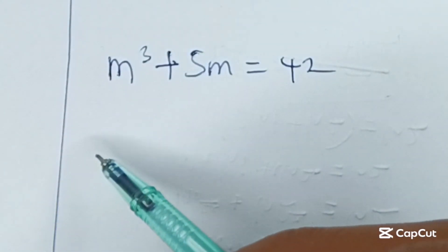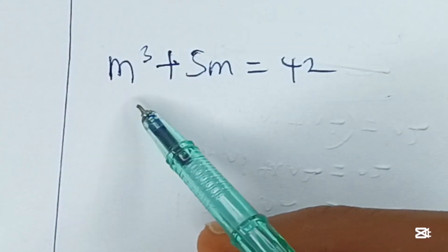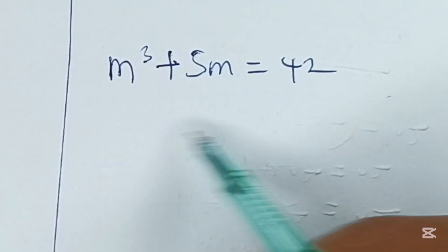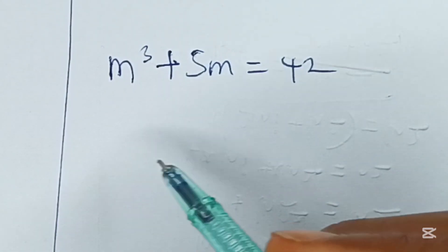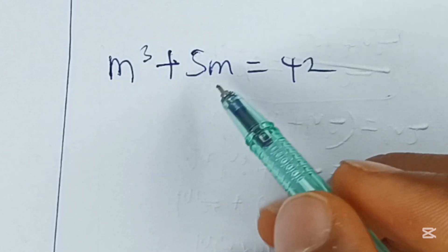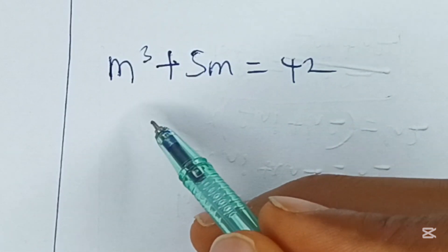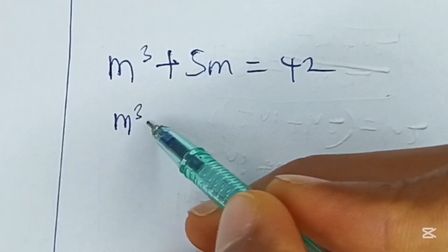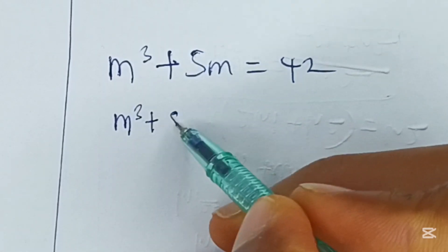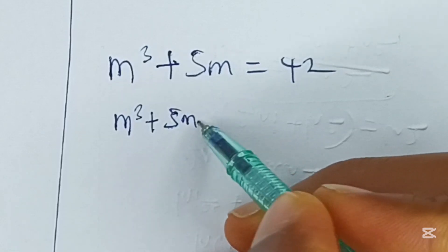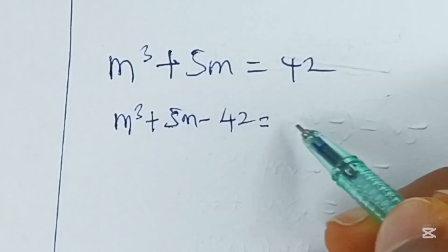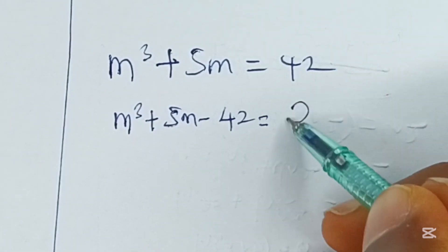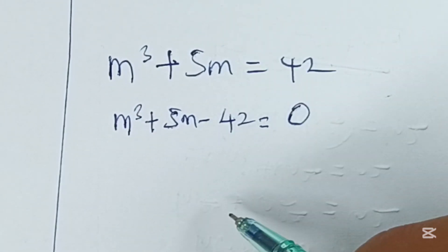Let's solve this together. It says m cubed plus 5m is equal to 42. How do we solve this? First things first, let's subtract 42 from both sides. So we have m cubed plus 5m minus 42 is equal to 0.